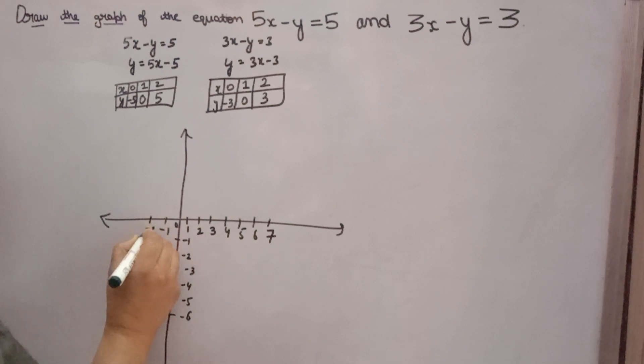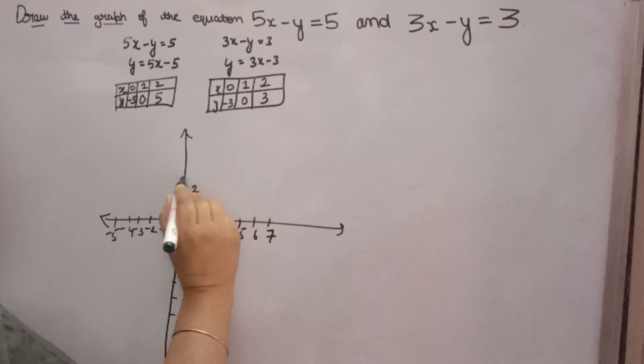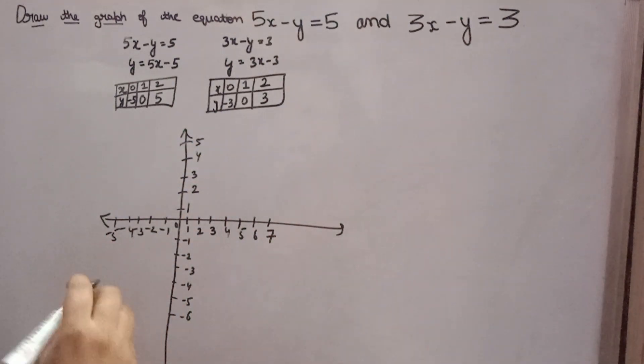Here positive 1, 2, 3, 4, 5. This graph you have to make on graph paper, then it will come accurate. I am telling on this, but you have to make on the graph paper. x is 0, y is minus 5, so one point will come here. Carefully you have to take care.